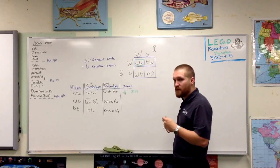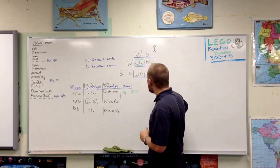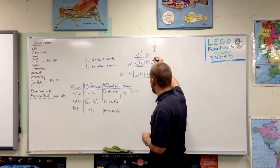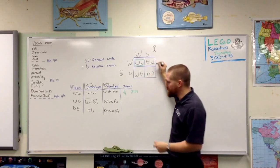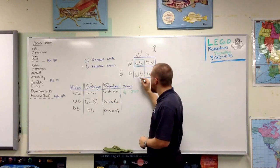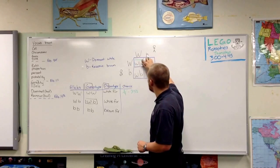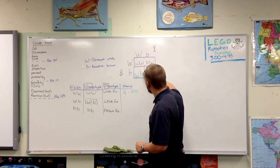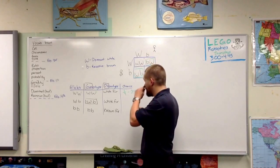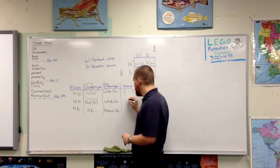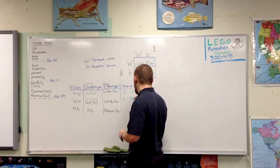What are the chances of this bunny being born with a dominant and a recessive genotype? The order doesn't matter — we're just looking for dominant and recessive. This one has a dominant recessive, this one has a dominant recessive. That gives us two possible combinations out of four. Two out of four is the same as one half, or 50%.